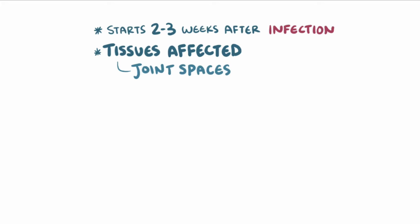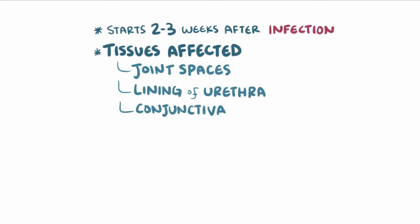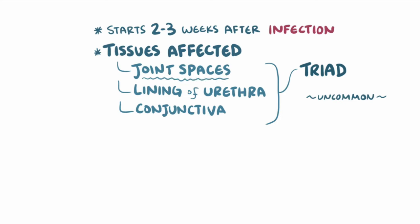Tissues usually targeted by the immune system are tissues of the joint spaces, but occasionally the immune system also attacks tissues like the lining of the urethra and conjunctiva. When all three of these tissues are affected — meaning the joint spaces, the urethra and conjunctivae — that causes a triad which associates arthritis, urethritis and conjunctivitis. However, this triad is very uncommon and usually only the joint spaces are affected.